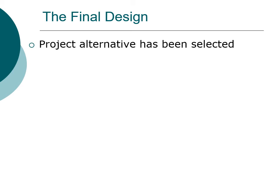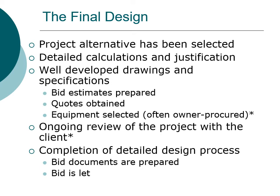Now we move into the final design stage. The project alternative has been selected and we begin doing much more detailed calculations and justification that allows us to actually start specifying equipment. At this point we have well-developed drawings and specifications. Bid estimates are prepared — either by the client or the engineering firm — quotes are obtained, and equipment is selected, often with the owner procuring the equipment. There is ongoing review of the project with the client.